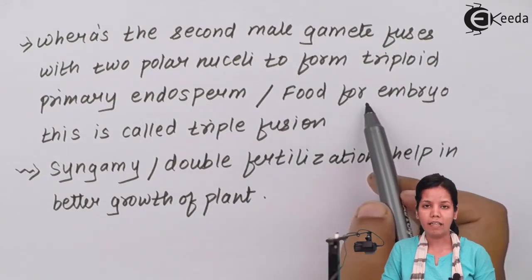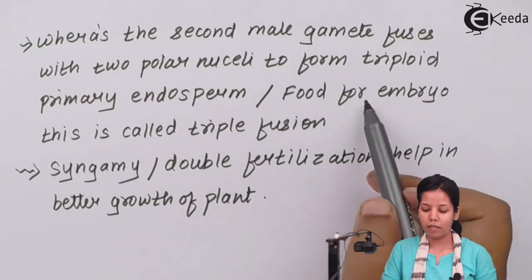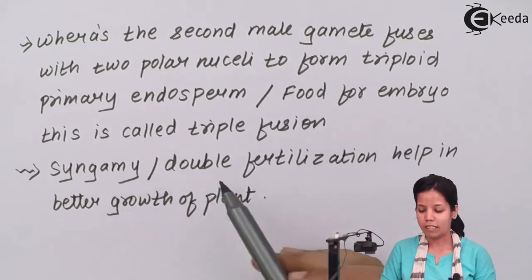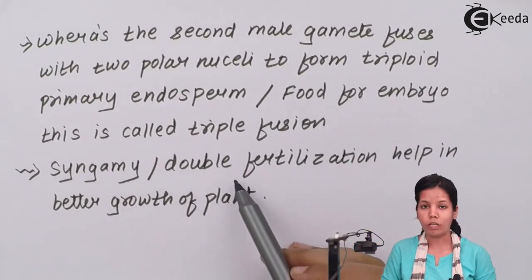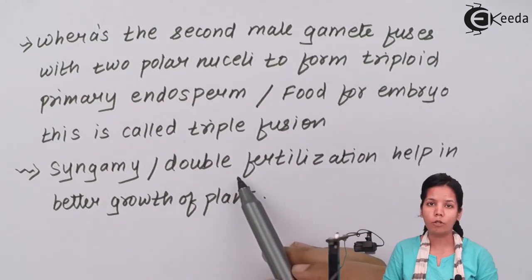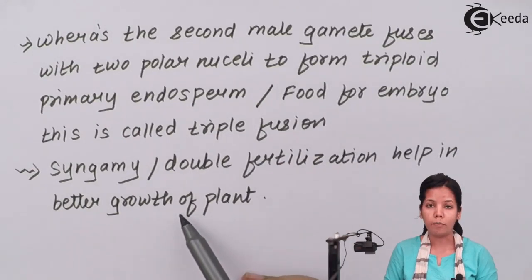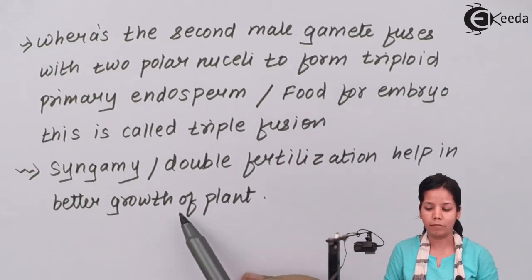Once an embryo has developed, it forms roots and radicals to absorb nutrients from the soil. Syngami is part of the double fertilization process and helps in the better growth of the plant, also helping to convert the plant or seed into a diploid state.